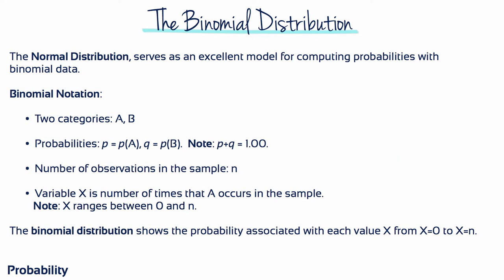To answer probability questions about binomial data, we need to examine the binomial distribution. To define and describe this distribution, we first introduce some notation. The two categories are identified as A and B. The probabilities associated with each category are identified as P(A), the probability of A, and Q(B), the probability of B. Notice that P plus Q equals 1 because A and B are the only two possible outcomes. The number of individuals or observations in the sample are identified by N, and the variable X refers to the number of times category A occurs in the sample. X can have any value from 0, meaning none of the sample is in category A, to N, meaning all of the sample is in category A.